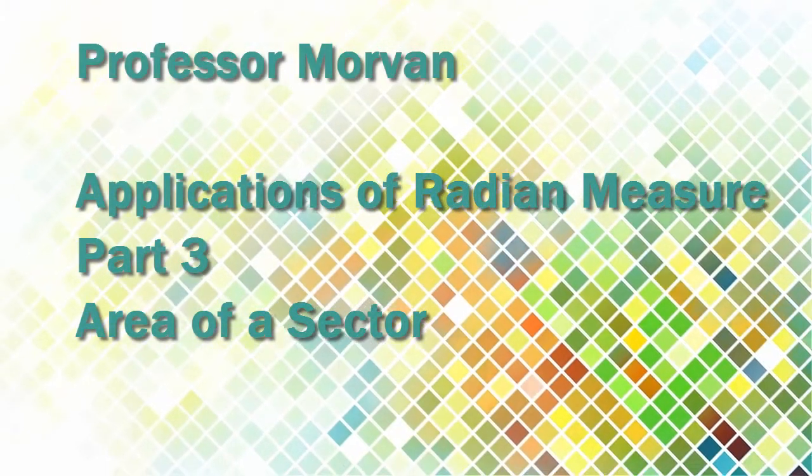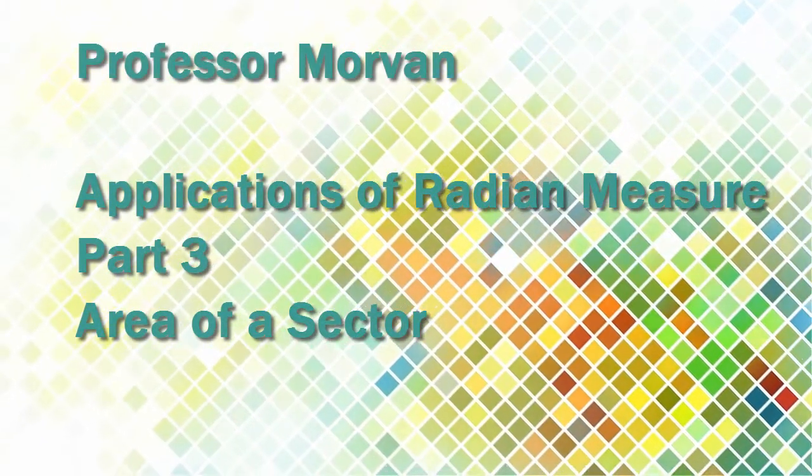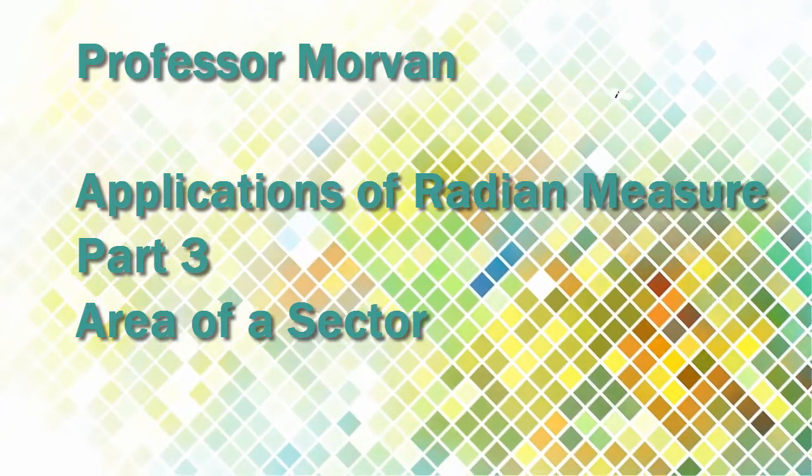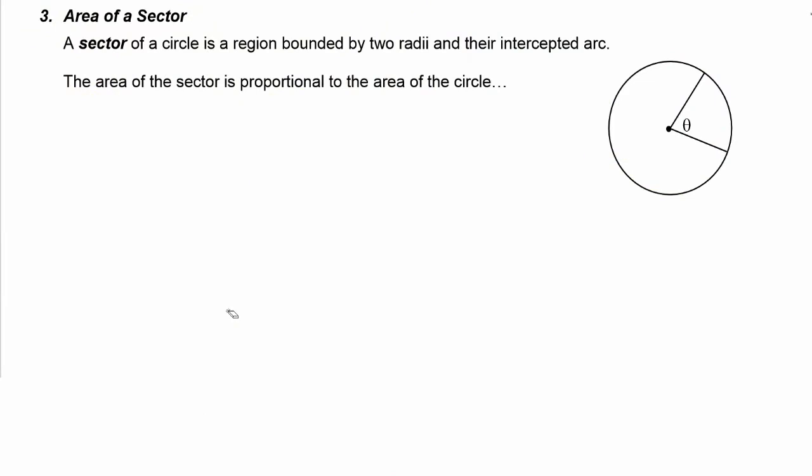In part three of our lesson on application of radian measure, you're going to learn how to work with the area of a sector. A sector of a circle is a region that's bounded by two radii and their intercepted arc.